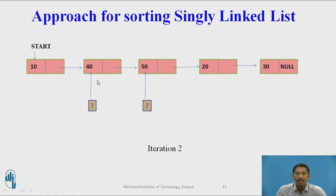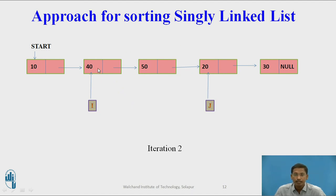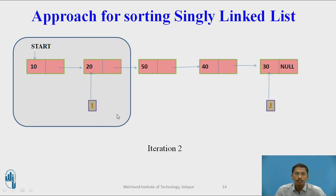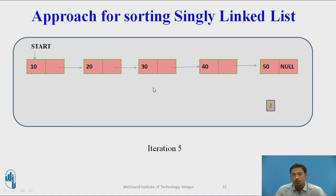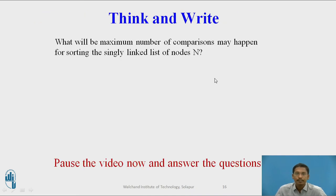Now i will move forward. i will point to node 40, and j will point to 50, 20, and 30 till j reaches null. 40 is compared with 50 — 40 is not greater than 50, swapping is not done. 40 is compared with 20 — 40 is greater than 20, so swapping is done. j moves forward. 20 is compared with 30 — 20 is not greater than 30, swapping is not done. j reaches null. After iteration two, these two nodes are getting sorted. This process continues till all nodes are sorted. After five iterations, all five nodes are sorted. You can pause the video and answer: what will be the maximum number of comparisons for sorting a singly linked list with n nodes?